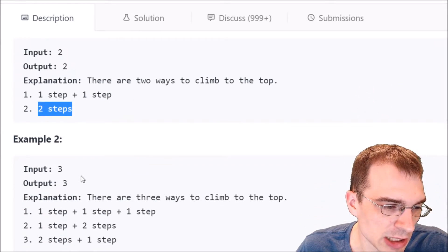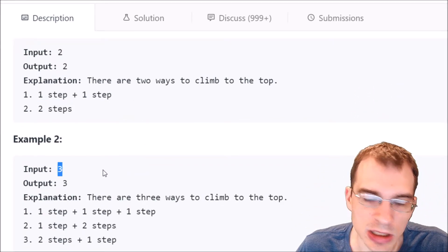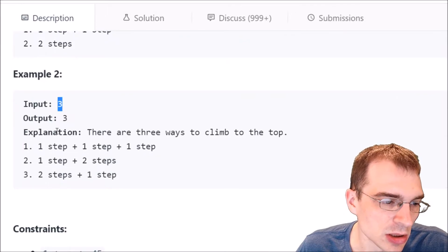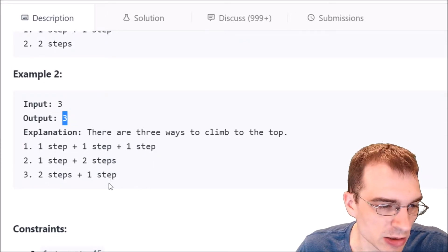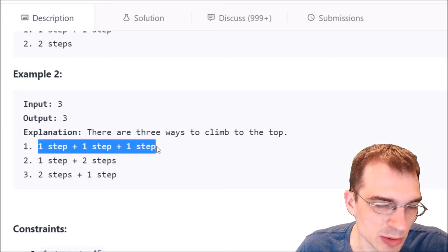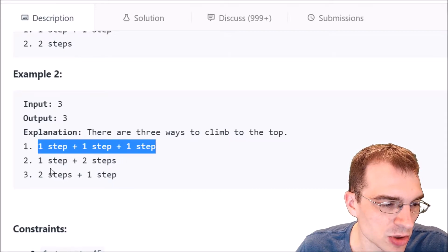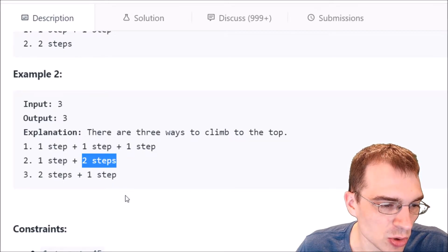And then the other example is an input of three, so a staircase of three stairs, and the output is three, so that means there must be only three ways to do that. We can do one step, one step, one step. So that's going to work for any length of staircase. And then the other two ways are one step then two or two steps then one.